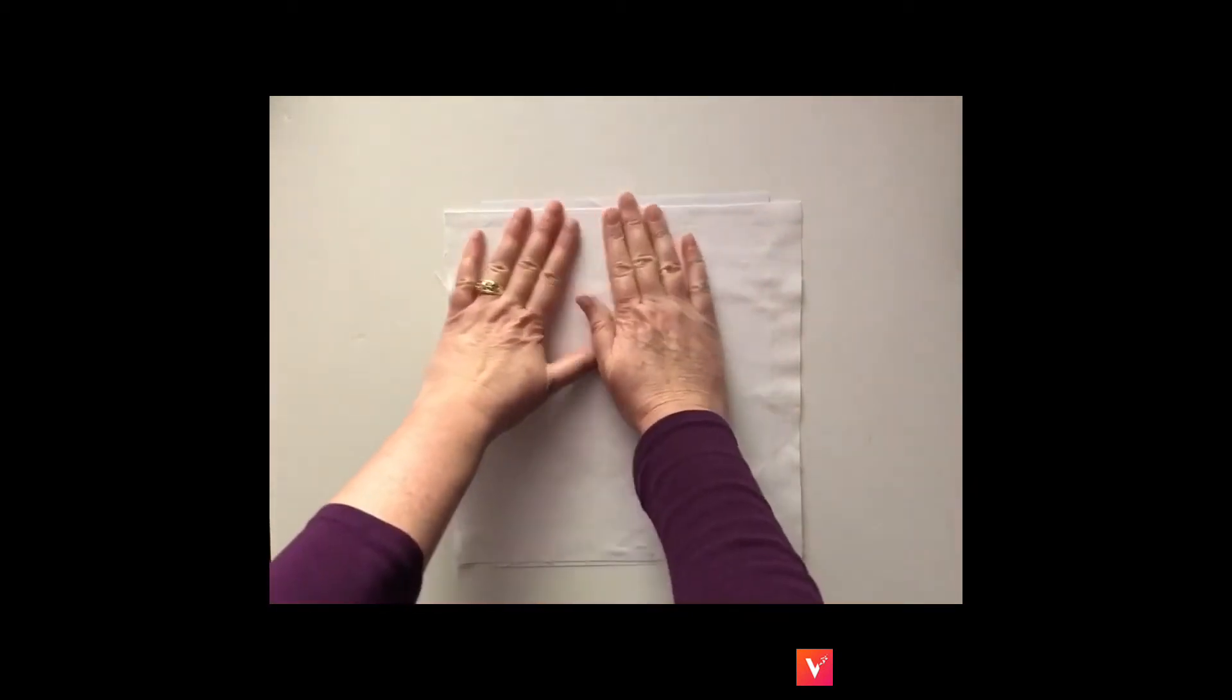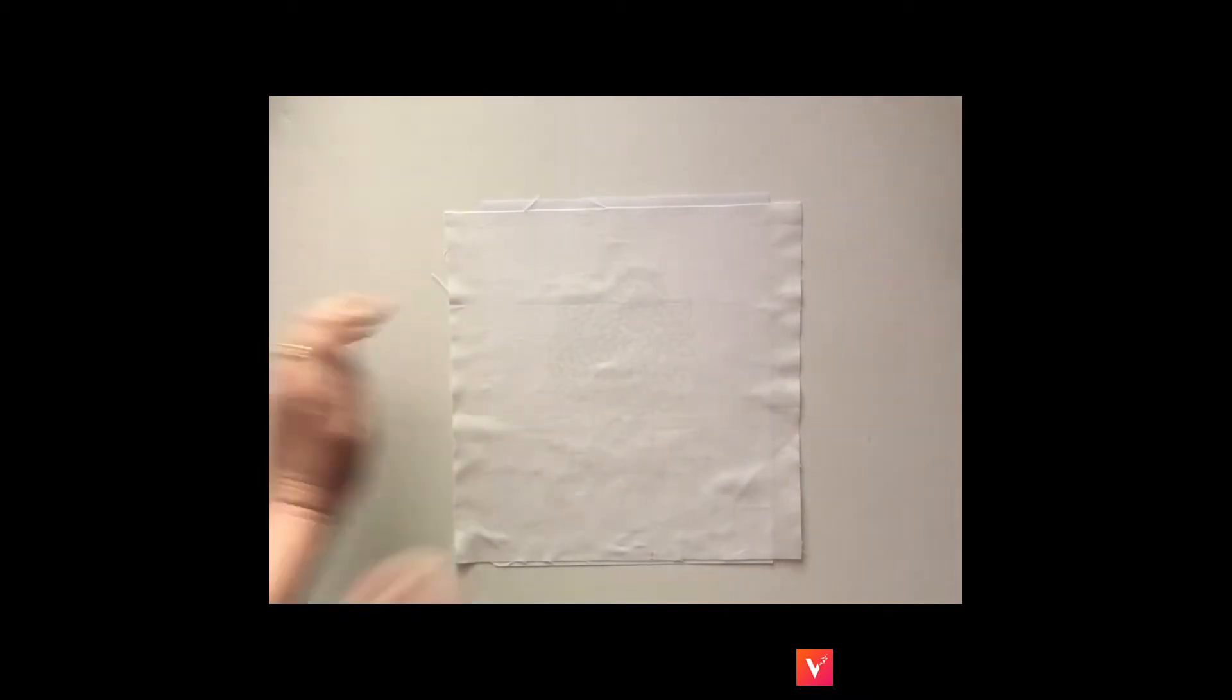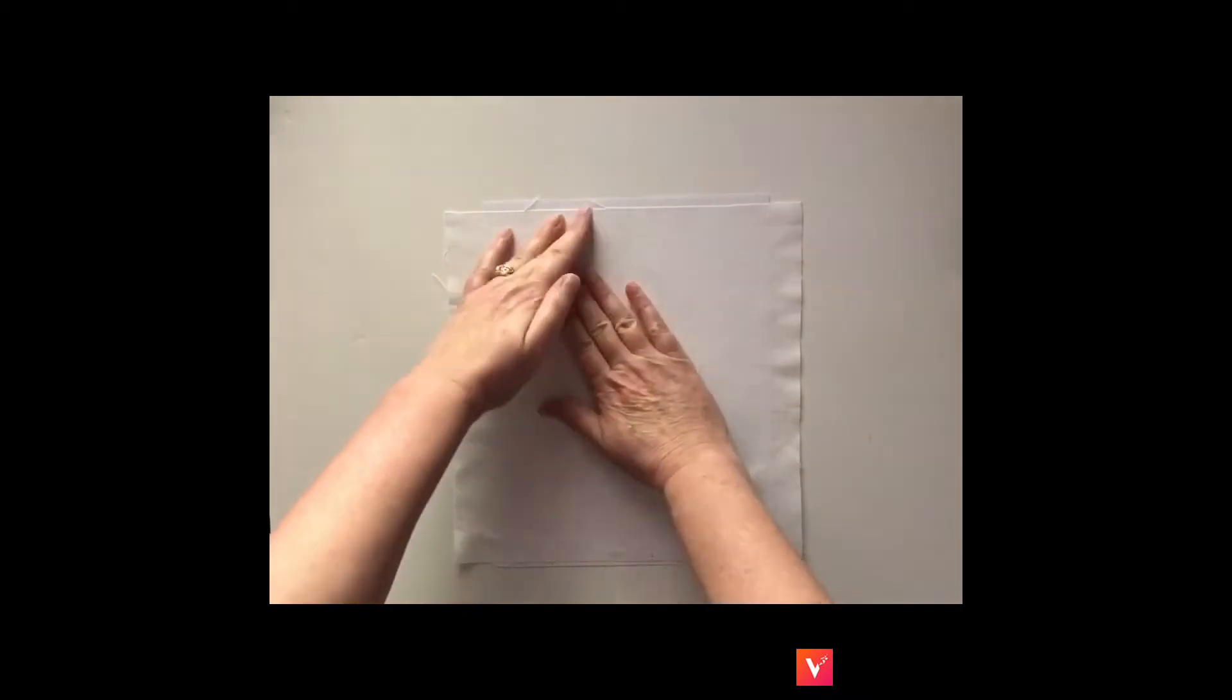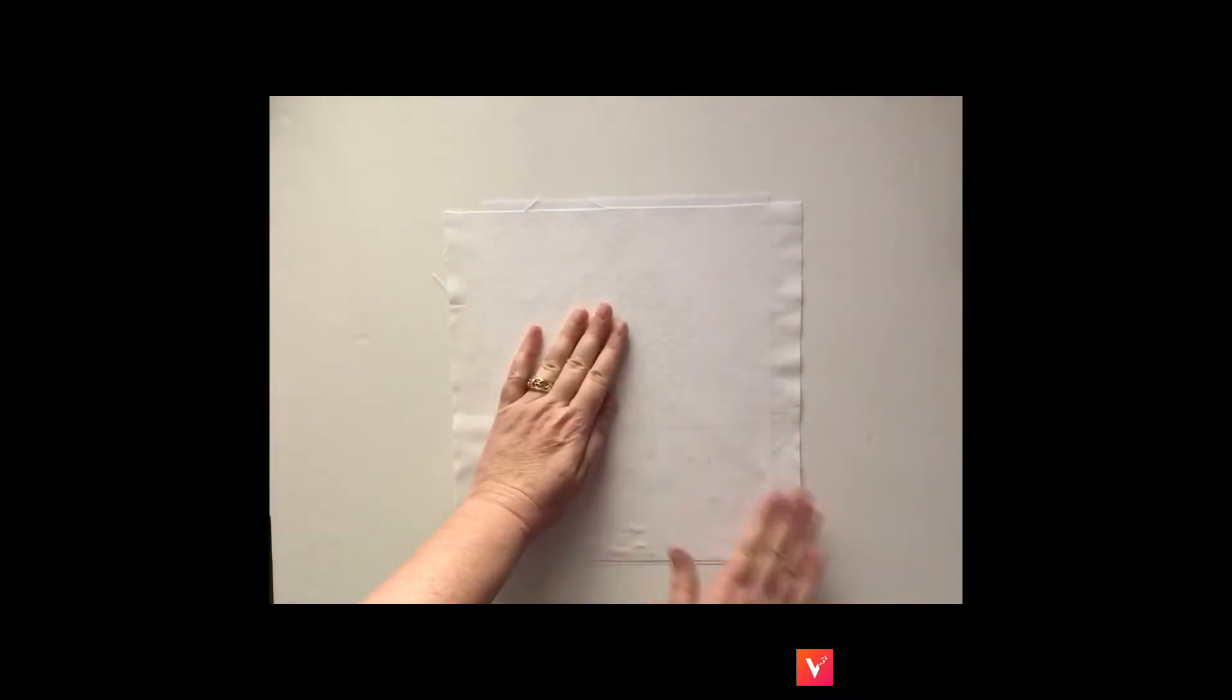I'm a little off but that's okay. I have a little less paper down here but that's all right. Now I'm going to smooth the fabric down onto the paper so there's no wrinkles.